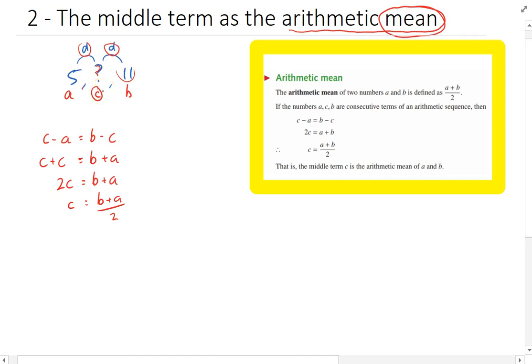So what's c? Well c is equal to 11 plus 5 divided by 2, which is 16 divided by 2, which is 8.